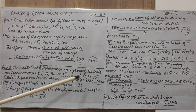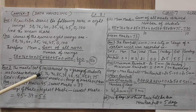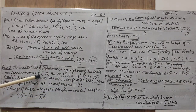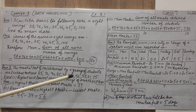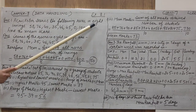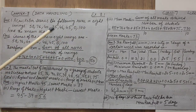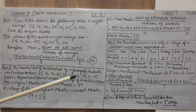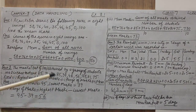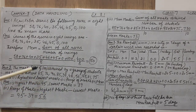You can see in these marks that 85 is repeated two times. Marks can be repeated for different students — the first student may get 85 marks and the fourth student may also get 85 marks. That doesn't matter; the data can be repeated. Any number can be repeated, because these are marks out of 100.